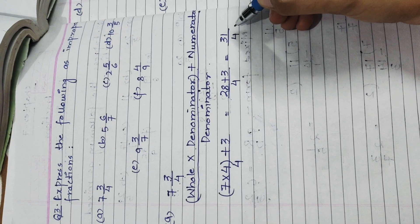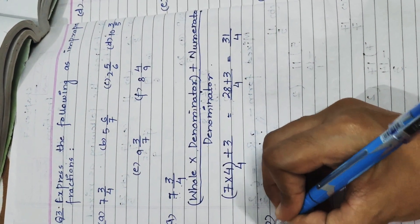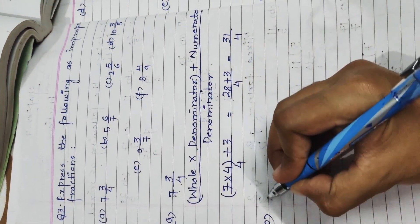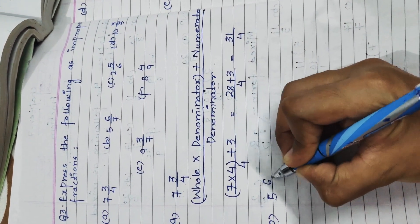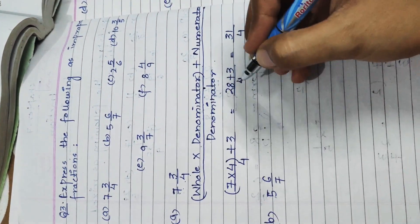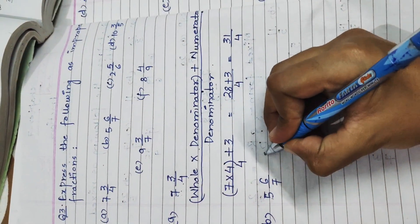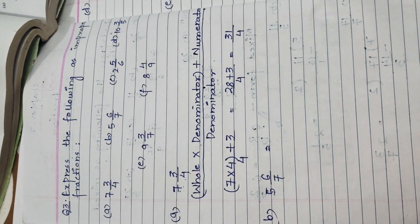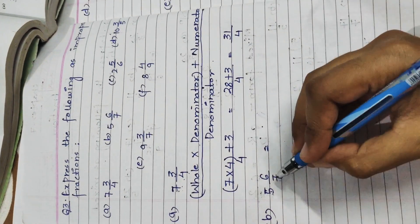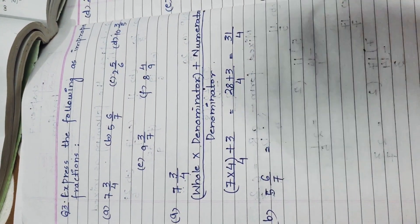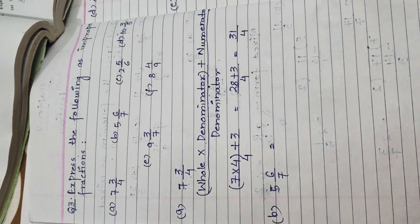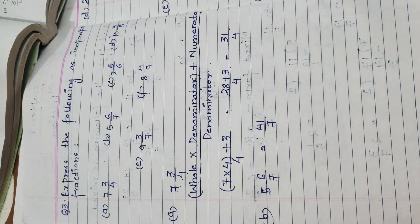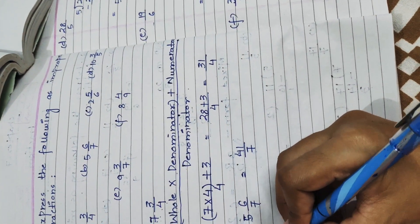Part B is 5 whole 6 upon 7. I will solve it directly without writing the full formula. Whole multiplied by denominator: 5 × 7 = 35, plus numerator 6: 35 + 6 = 41. The answer is 41 upon 7.